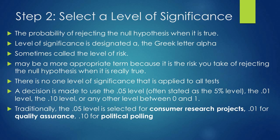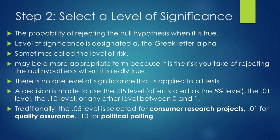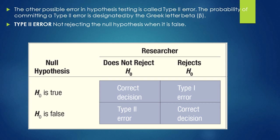Traditionally the 0.05 level is selected for consumer research projects, 0.01 for quality assurance, and 0.10 for political polling. The other possible error in hypothesis testing is called a Type 2 error. The probability of committing a Type 2 error is designated by the Greek letter beta. Type 2 error is not rejecting the null hypothesis when it is false.